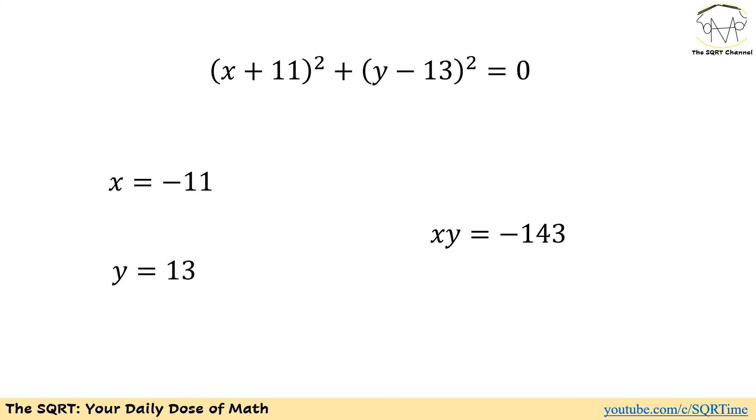And we have x equals to negative 11 and y equals to 13, so xy is going to be 13 times minus 11 or minus 143. Remember we wanted to solve this equation in real numbers, so we found the answer that we wanted to find.